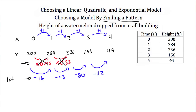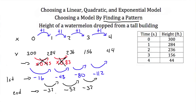Our last step is to check for second order differences. Between -16 and -48 that's a difference of -32. Between -48 and -80 that's -32. And between -80 and -112 that's also -32. These second order differences are constant, which means this is a quadratic equation in the form y = ax² + bx + c. So we know this data fits a quadratic model.